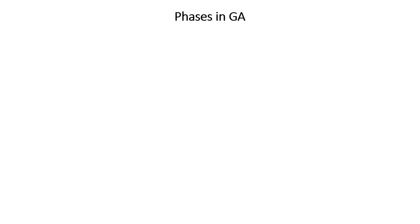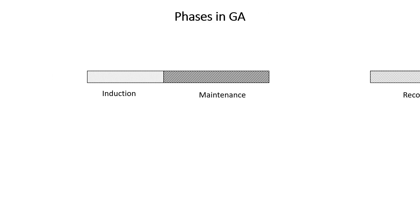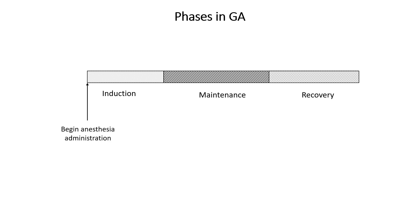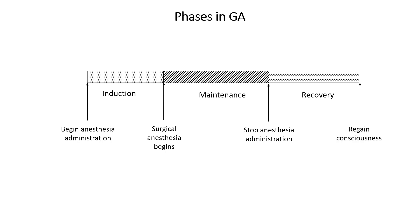The cardinal features, the anesthesia triad, and the reversibility we have discussed are observed during the whole process of general anesthesia as three phases: induction, maintenance, and recovery. Induction is the period from the administration of anesthesia to the achievement of effective surgical anesthesia. Maintenance ensures sustained surgical anesthesia and ends when anesthesia administration is ceased. Recovery refers to the time from discontinuation of anesthesia until the patient regains consciousness and protective physiologic reflexes.